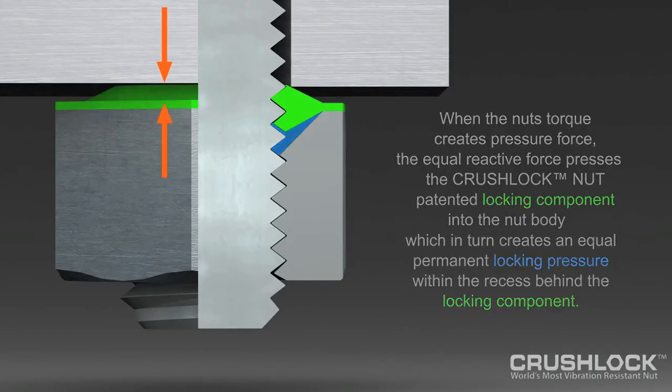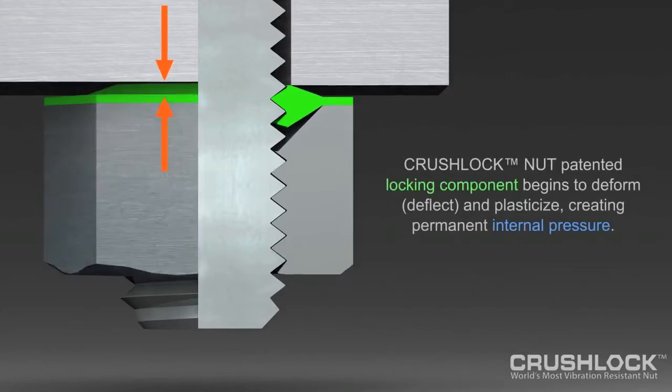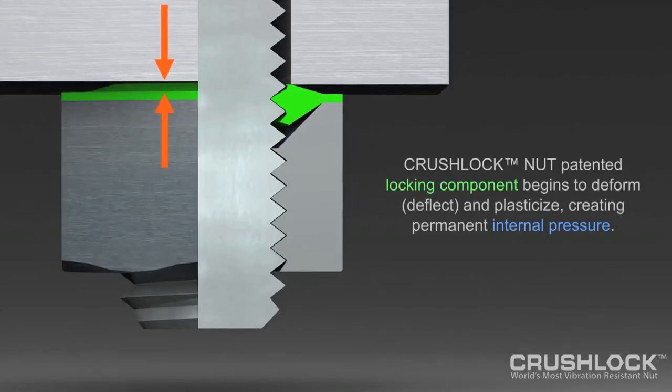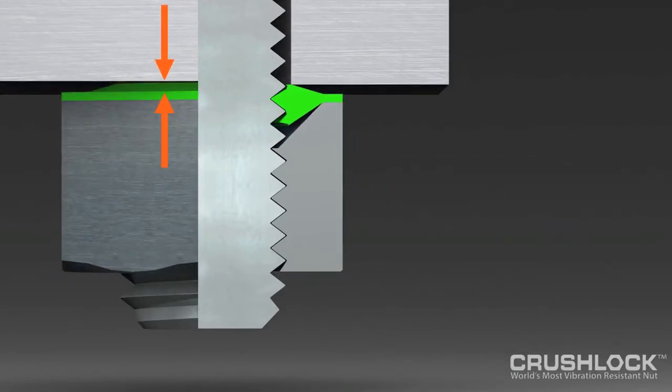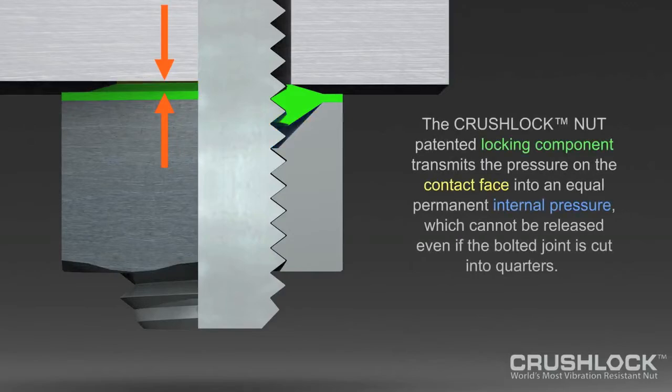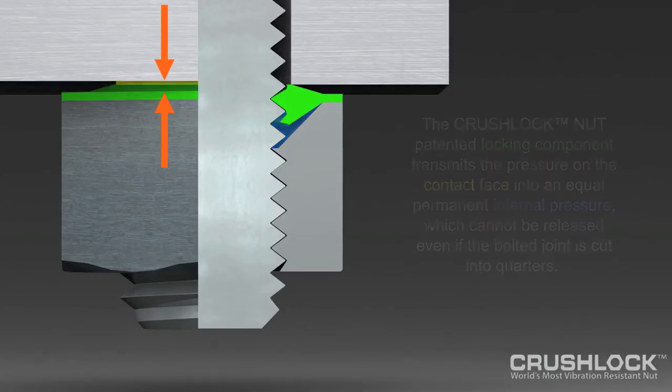Because stronger pressure equates to a stronger bolted joint, Crushlock Permanent Nut was engineered for extreme performance from its inception by using computer modeling in 2D, 3D, and finite element analysis. Crushlock Permanent Nut performance is permanent once